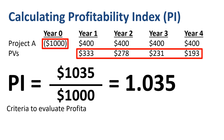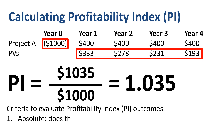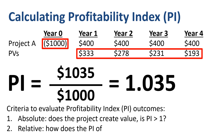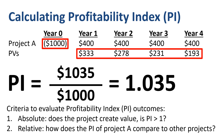Now that we have calculated the Profitability Index outcome, is this a good or a bad number? In absolute terms, projects with a Profitability Index higher than 1 create value for the company. In relative terms, maybe there are many other project proposals with a Profitability Index far higher than 1.035. In that case, project A might not be the most attractive, especially when the investment budget is tight and not every project above 1 will get selected.